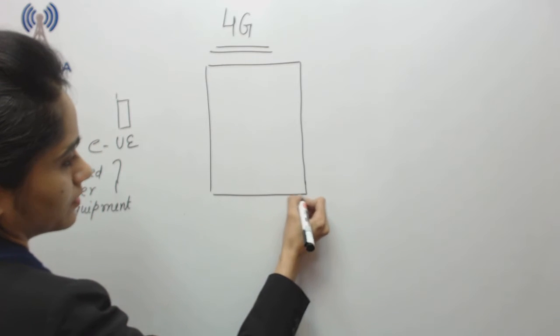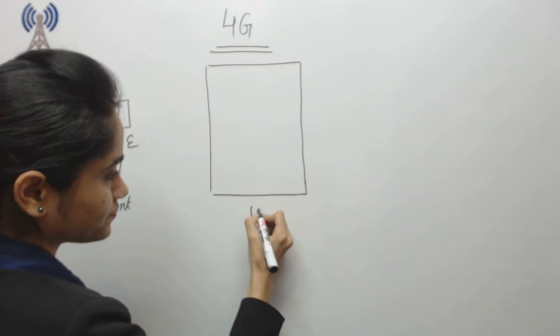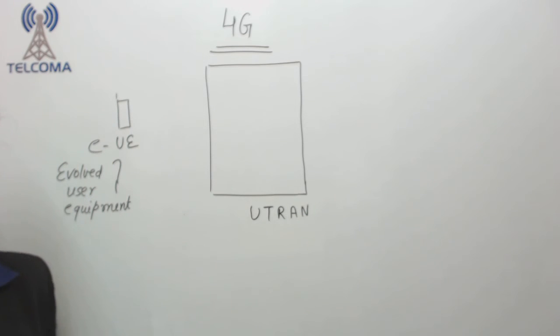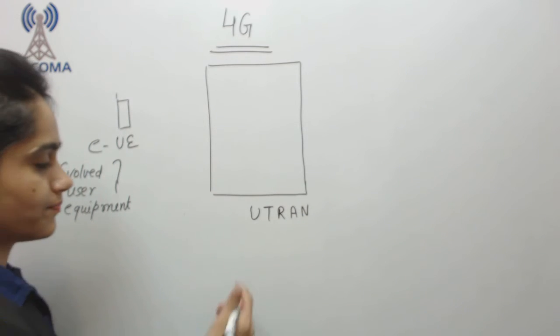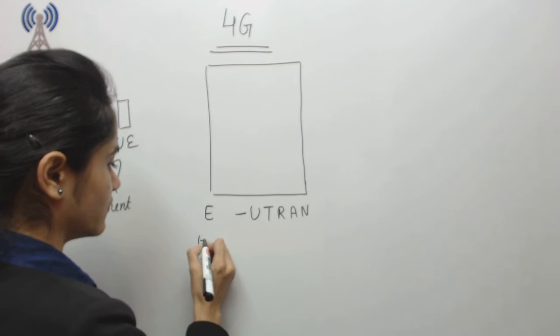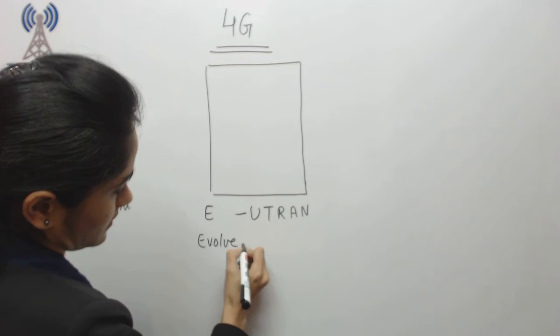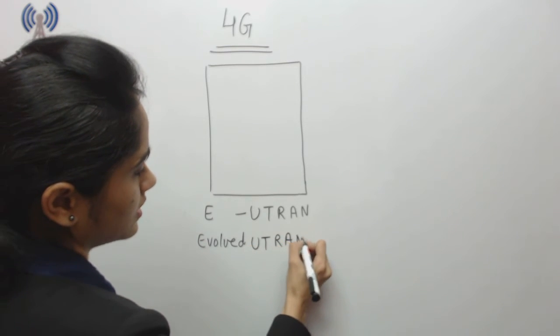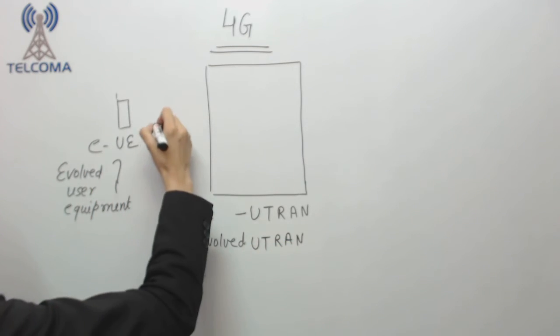So if we talk about the core network like radio network, we have UTRAN part of 3G which is universal terrestrial radio access network. Here we call it EUTRAN because this is also evolved, evolved UTRAN, universal terrestrial radio access network.